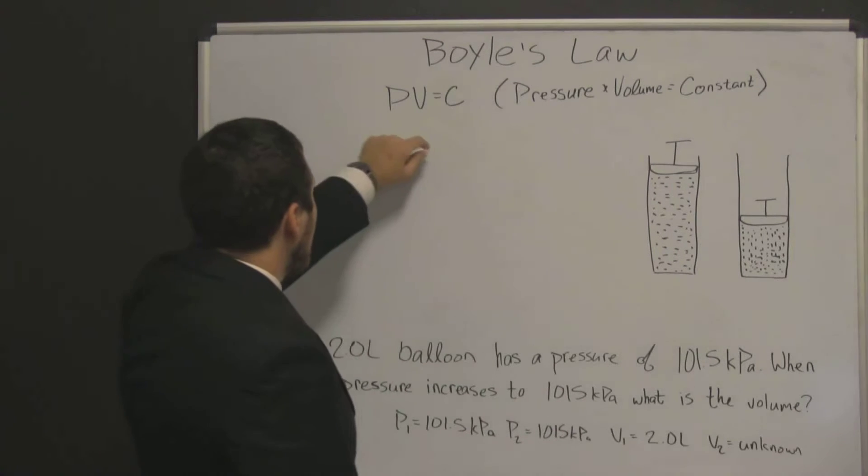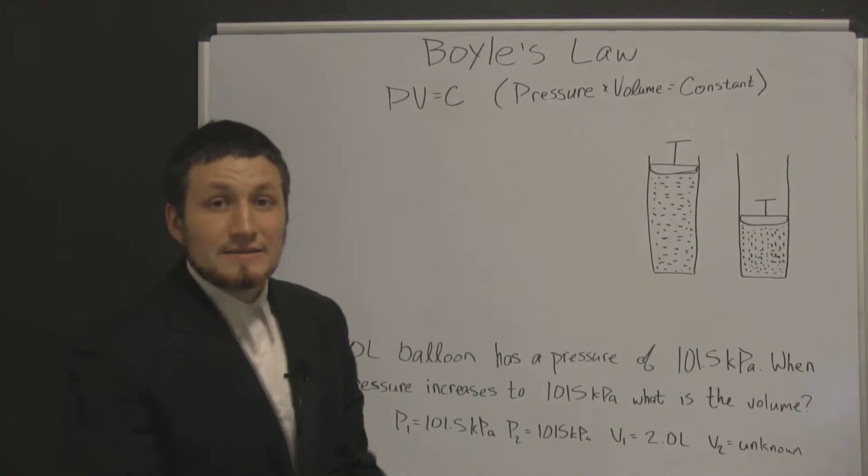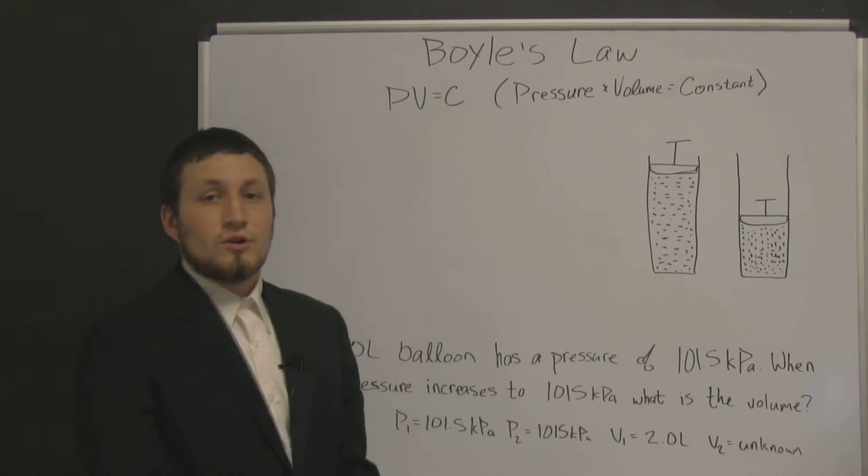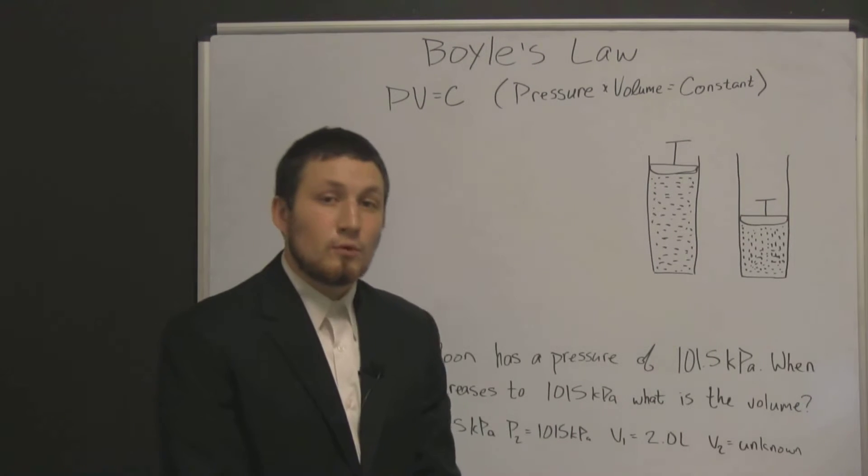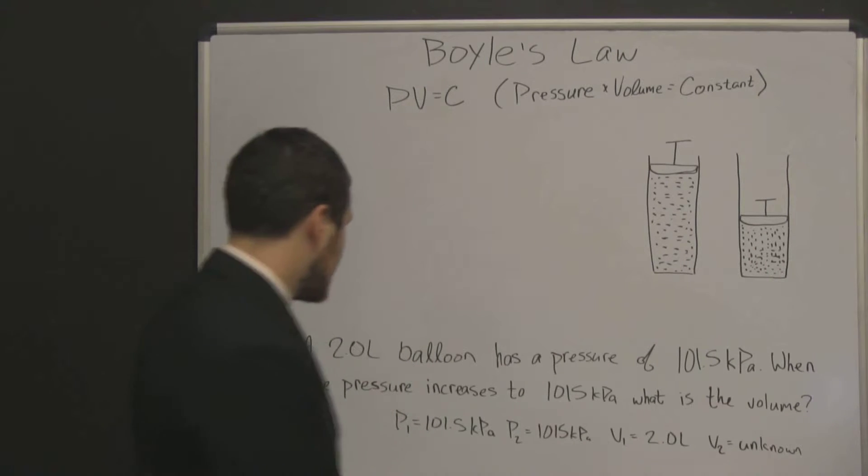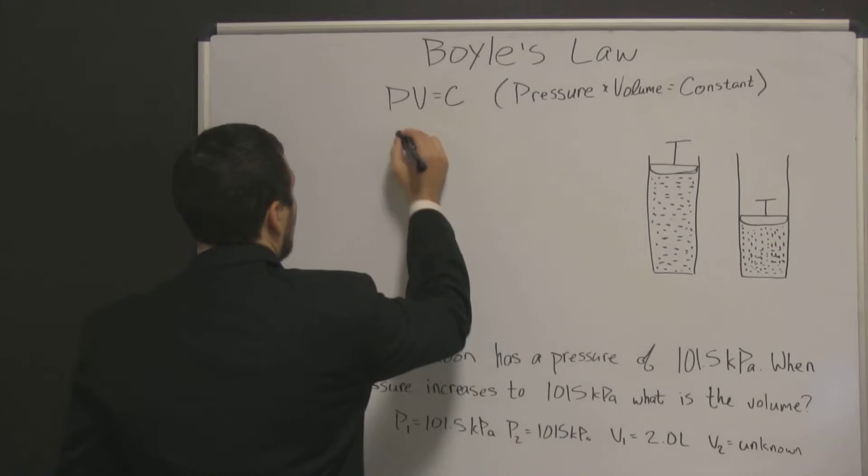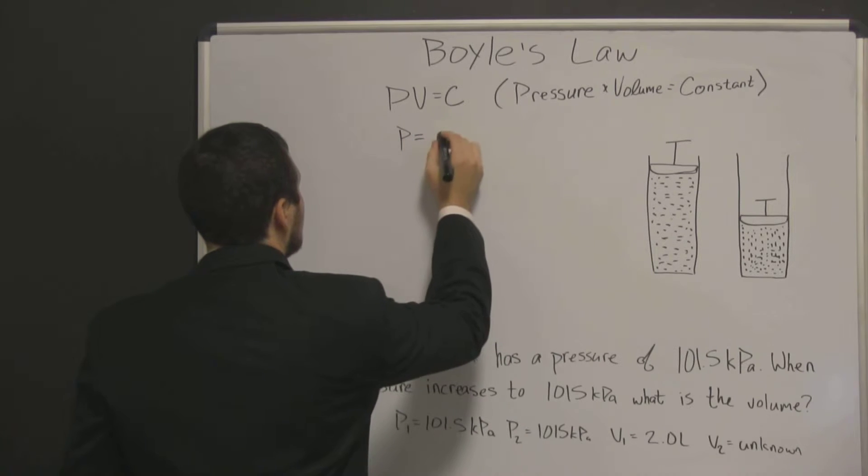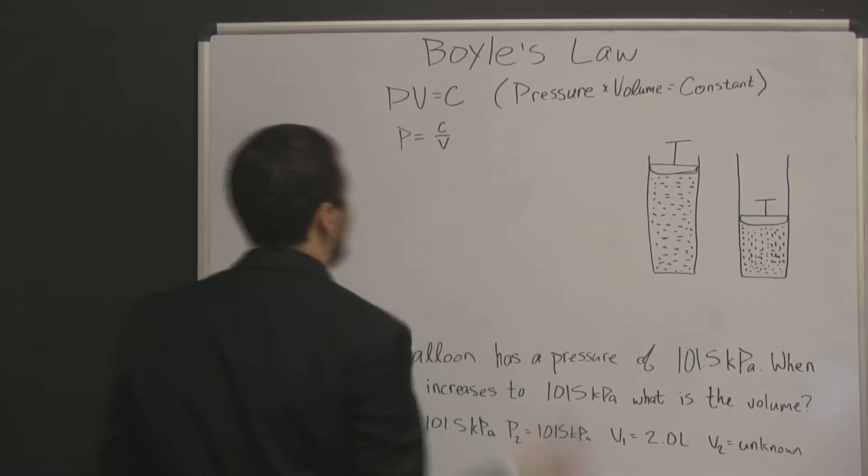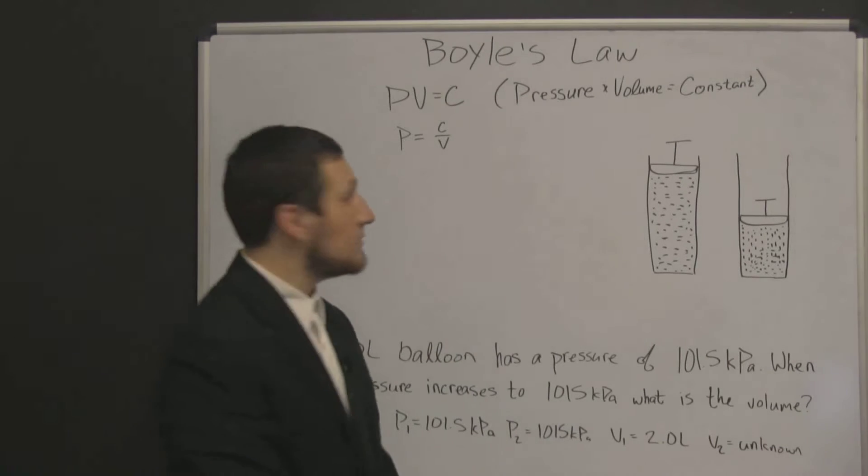Boyle's Law says that pressure times the volume is equal to a constant. In other words, pressure and volume are inversely proportional to each other at all times. Another way this could be written would be that P is equal to C over V, if you're more familiar with inverse proportion laws.